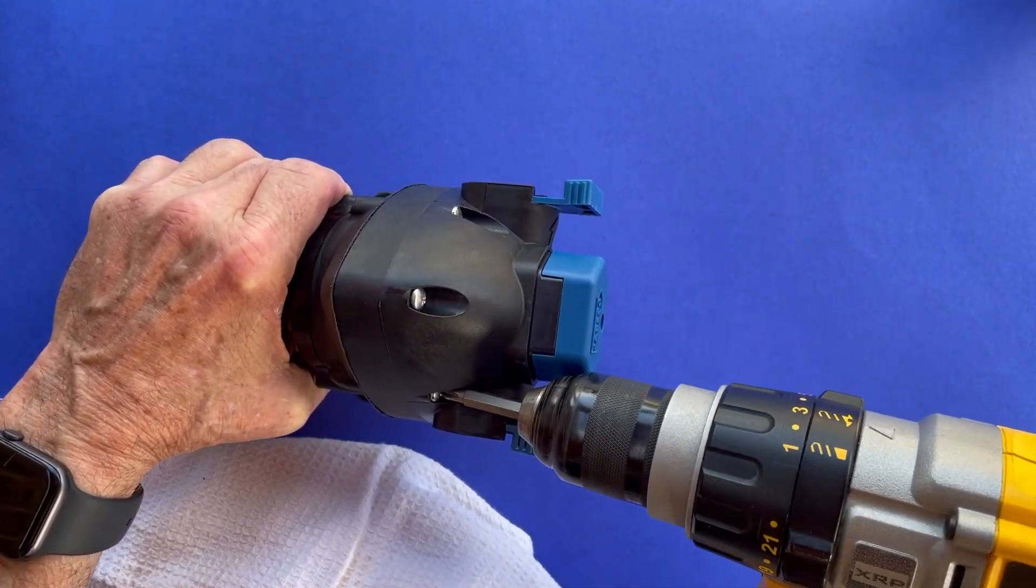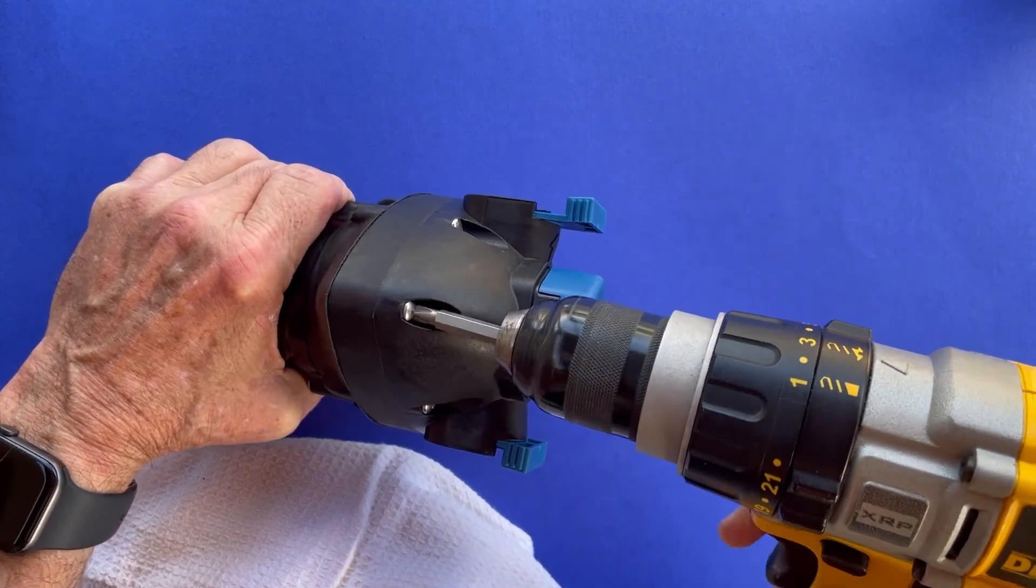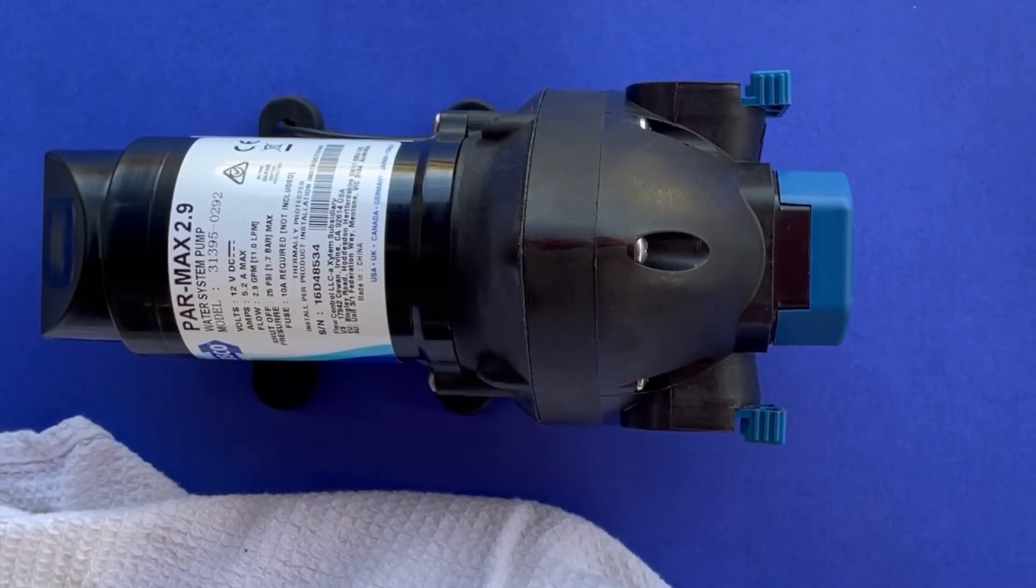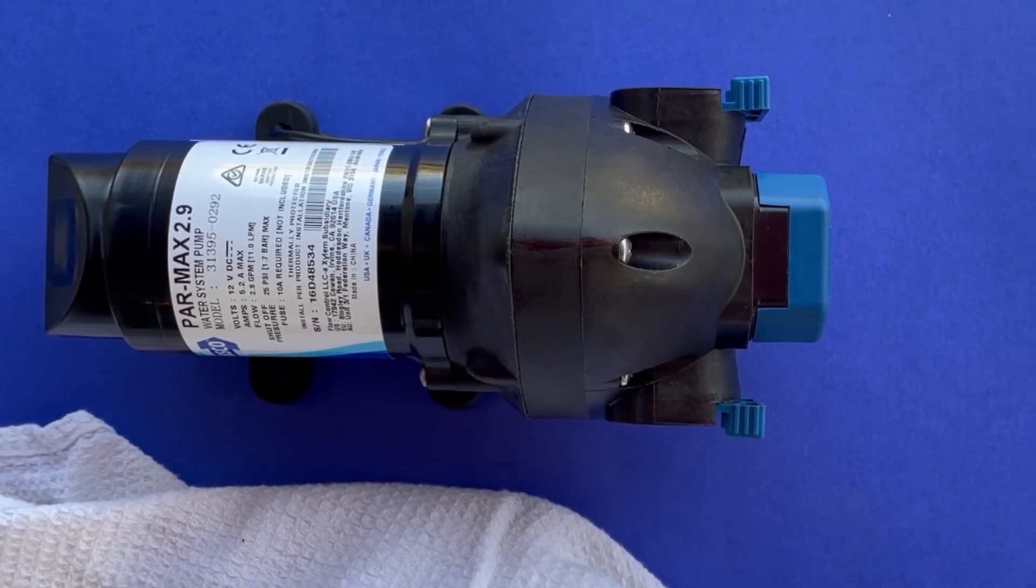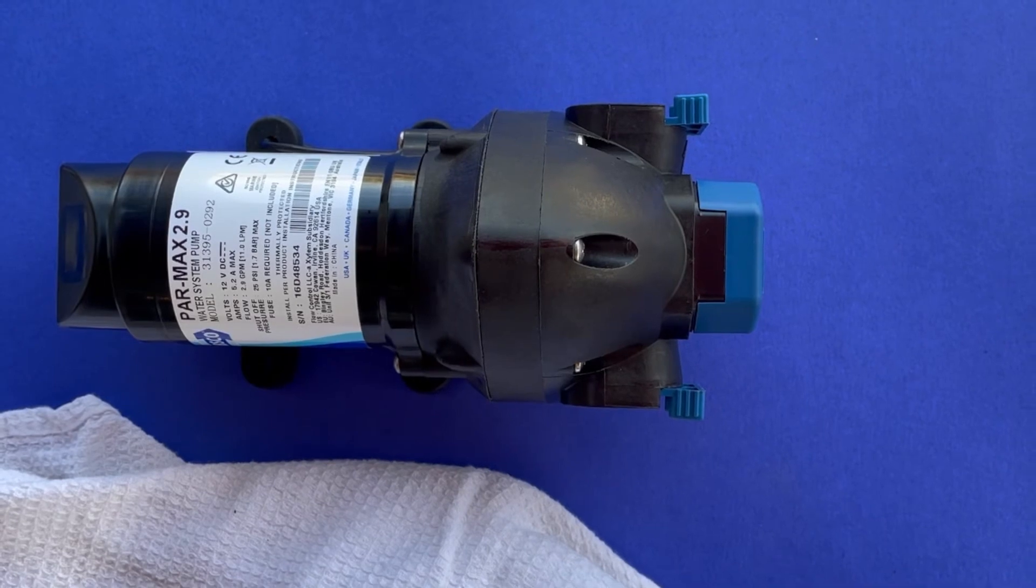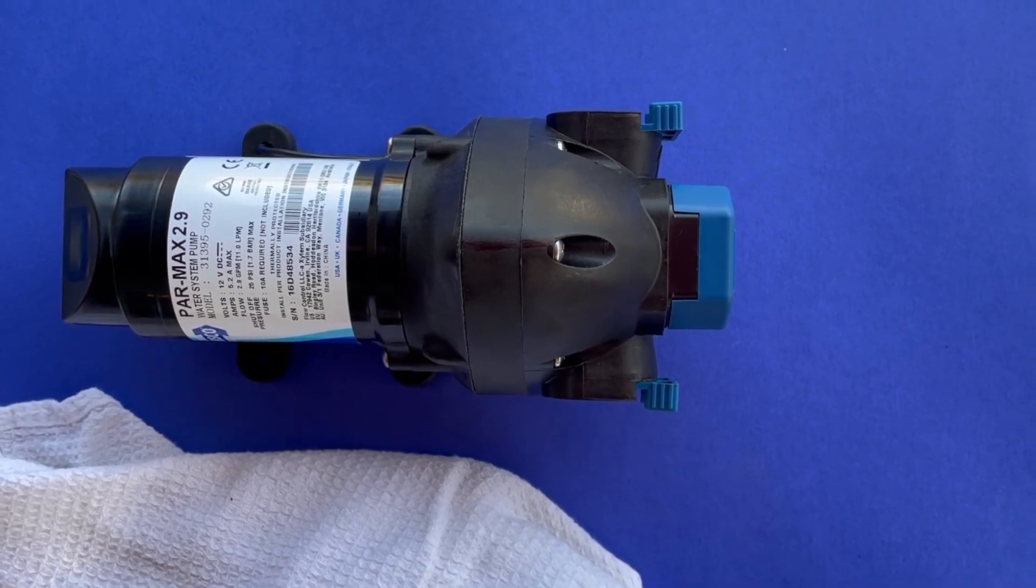Lastly, do a final tightening of the screws. You are now ready to place the pump back into service. Reconnect the plumbing and power connections, open the seacock, check for leaks, and test the pump.